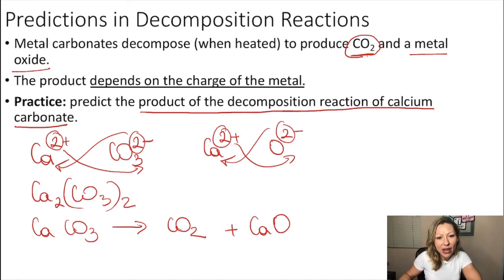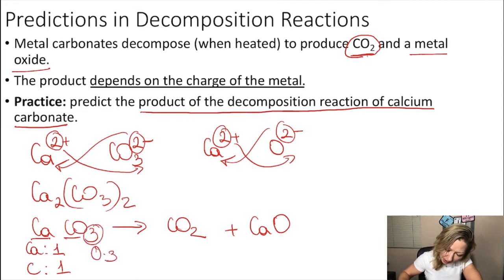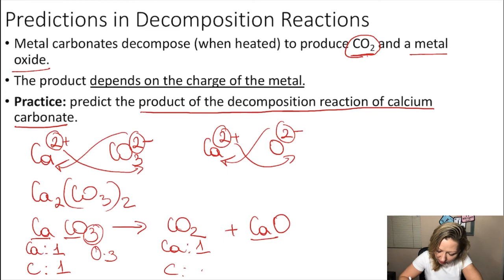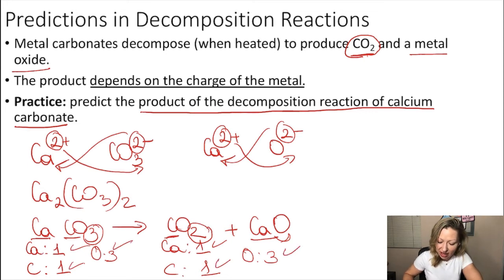Let's balance the equation. On the reactant side: one calcium atom, one carbon atom, three oxygen atoms. On the product side: one calcium atom, one carbon atom, and three oxygen atoms total (one in CaO, two in CO2). So the equation is already balanced. CaCO3 → CaO + CO2.